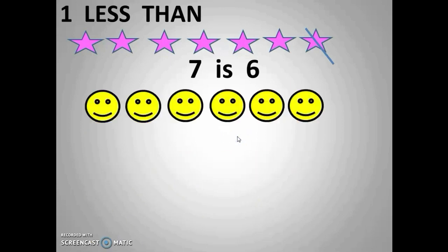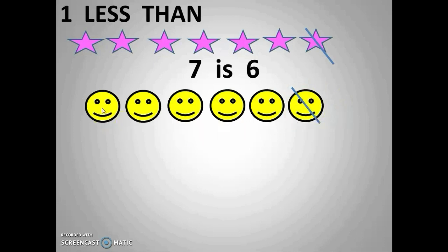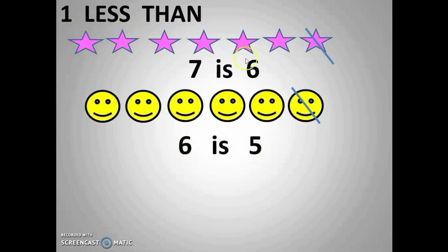Let's check the next example — these are all smileys. How many smileys are there? One, two, three, four, five, six — six smileys. So one less than six: I am cutting one. Before, six smileys were there and I cut one. Now let's count: one, two, three, four, five — our answer is five. So one less than six is five, and one less than seven is six.